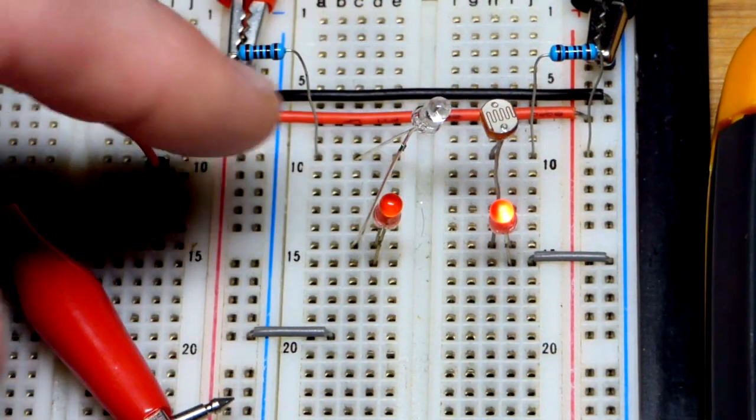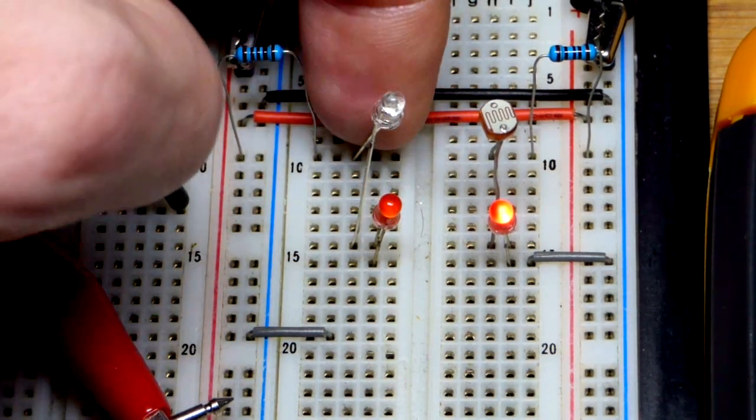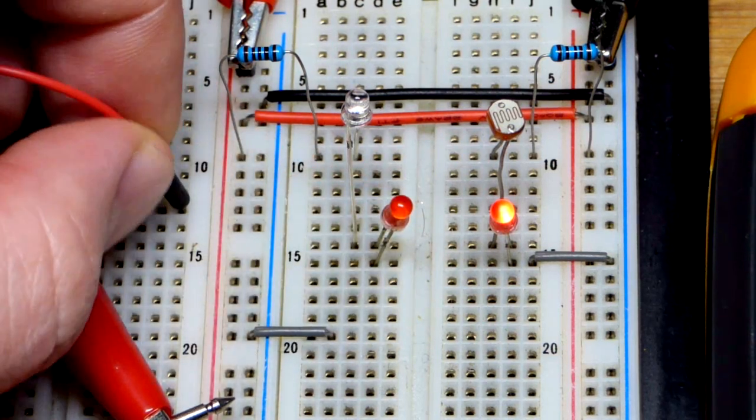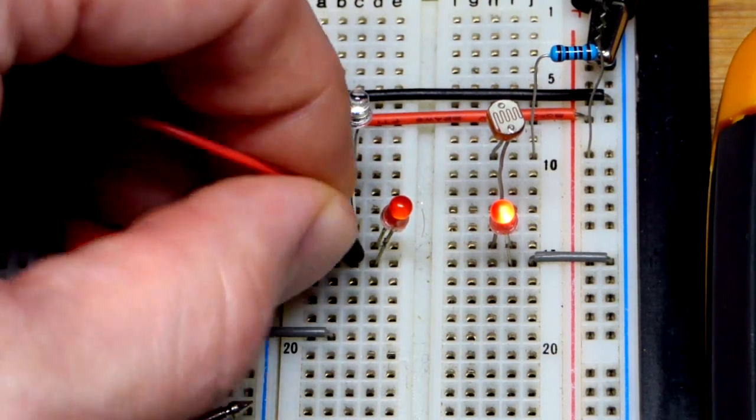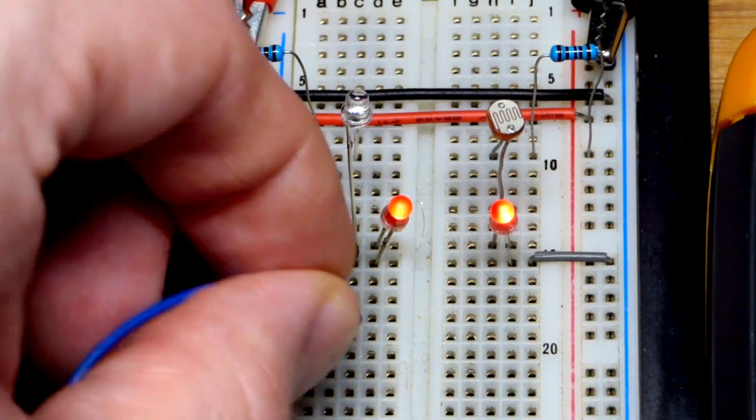Now we're going to do the same with the photo diode. Remember the photo diode is a type of diode you use reverse bias, so that's the shorter lead, the cathode there, longer lead the anode coming to the anode of the LED.